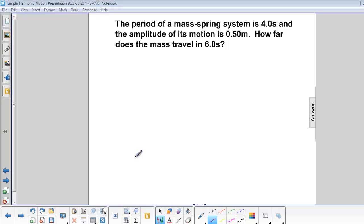The period of a mass spring system is 4 seconds, and the amplitude of its motion is 0.5 meters. How far does the mass travel in 6 seconds?